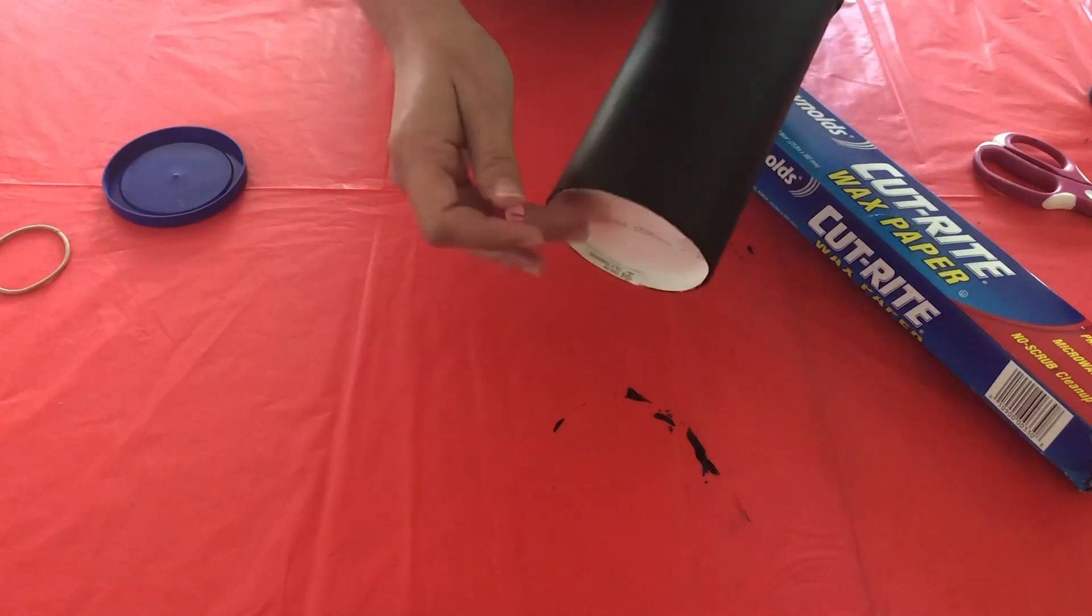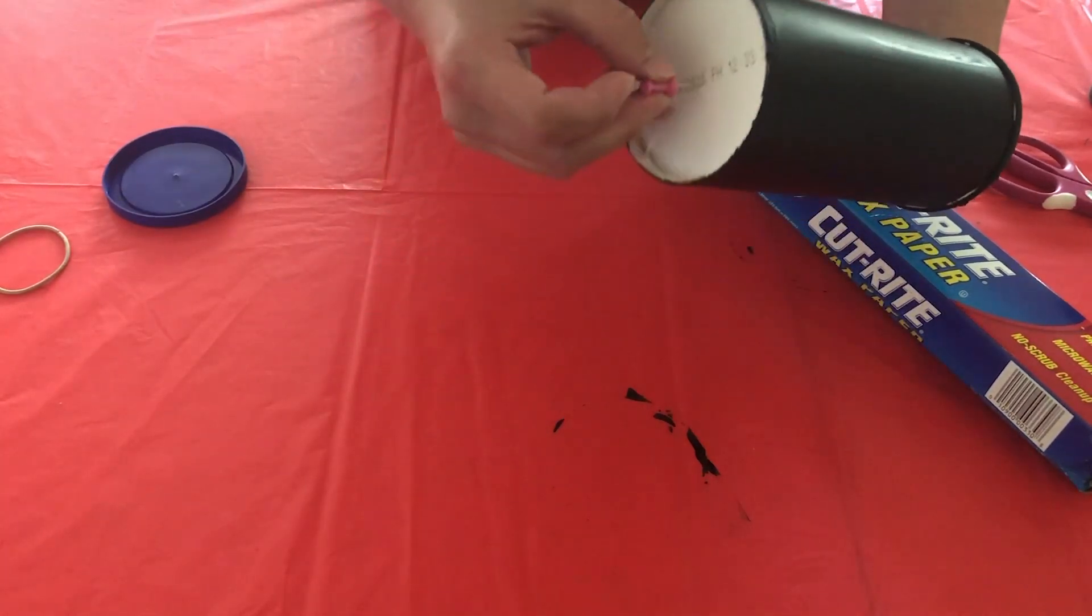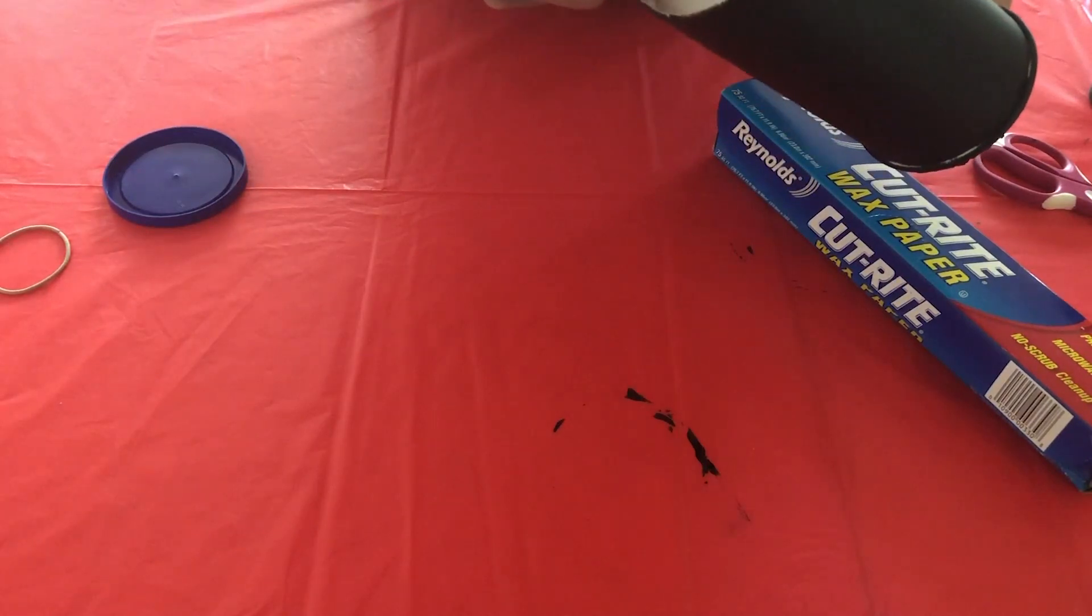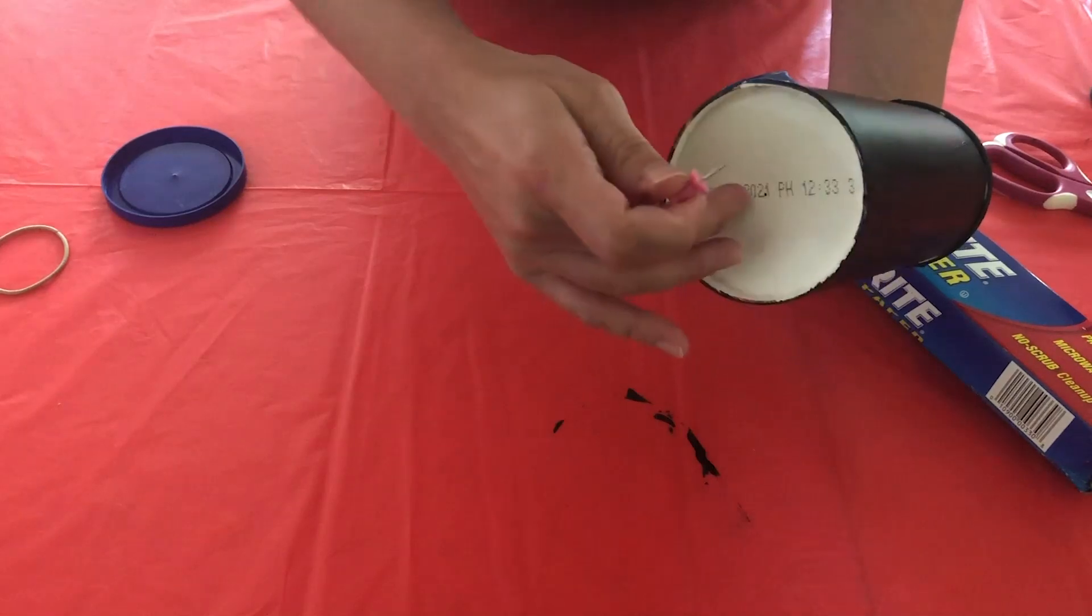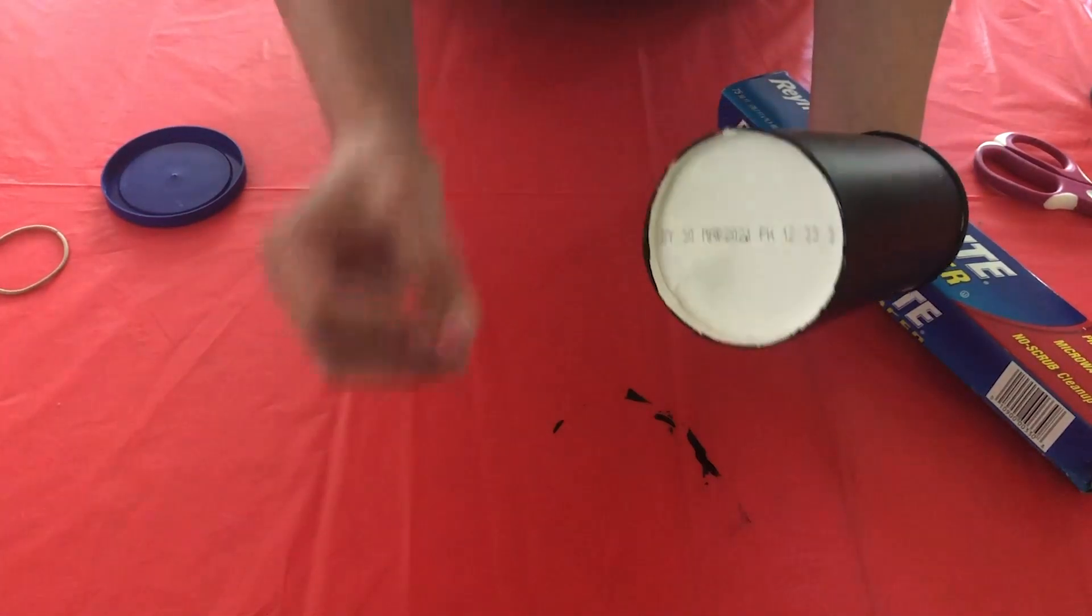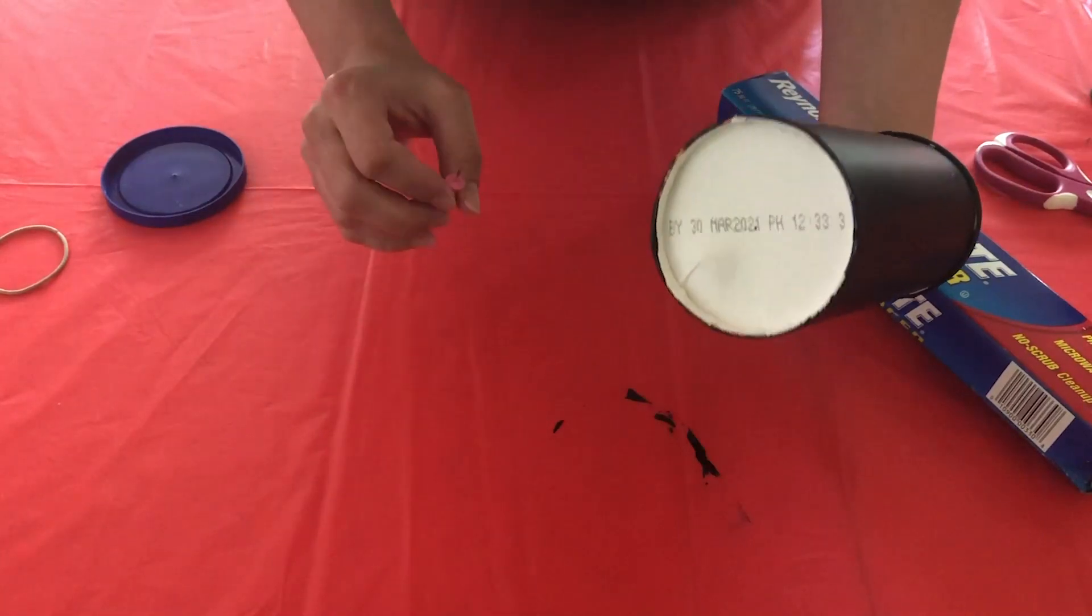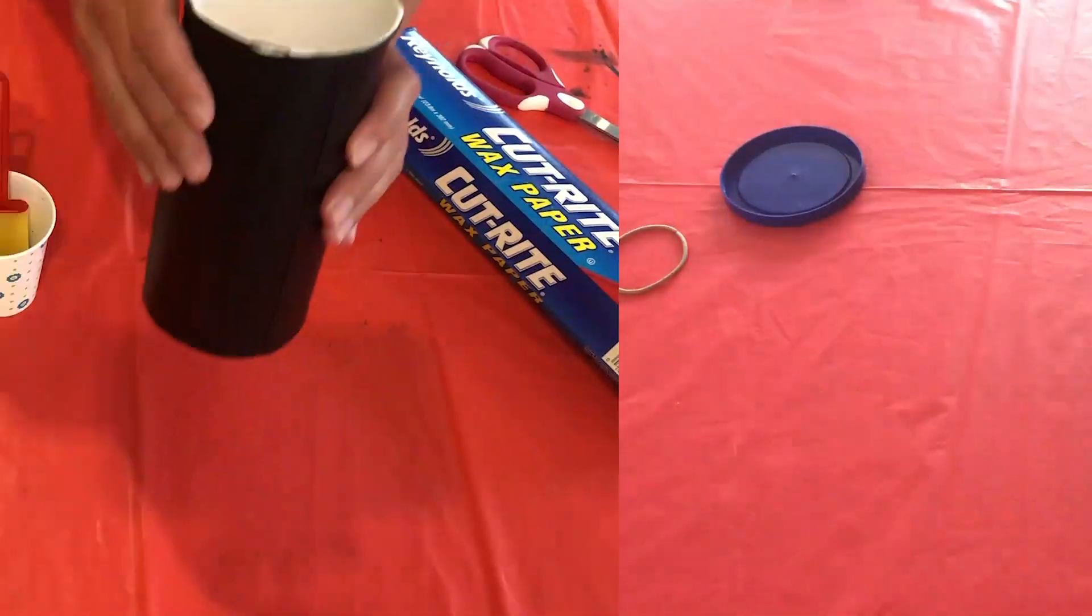So we're gonna do now is take a pushpin and go ahead and poke a hole right in the center of the container. Now later on once we start using it and not enough light's going through, you can make the hole just a little bit bigger. But we're gonna go ahead and start off with it being small for right now and see how it works.